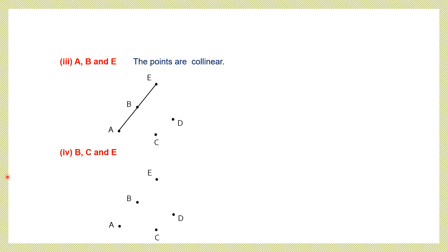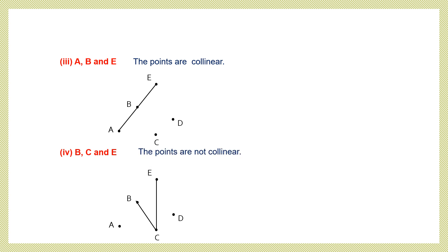Fourth set — B, C and E: place the ruler at B, draw a line to C, then from C to E. They are not on the same straight line, so these are non-collinear points. B, C and E are not collinear.